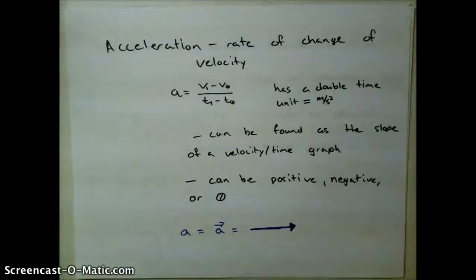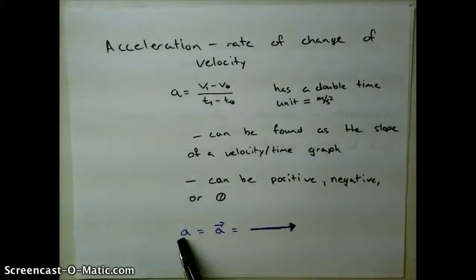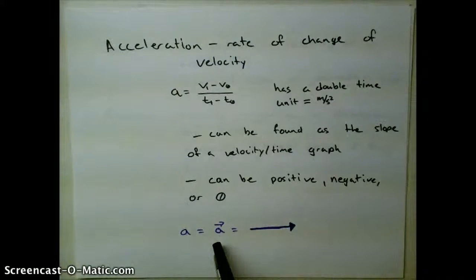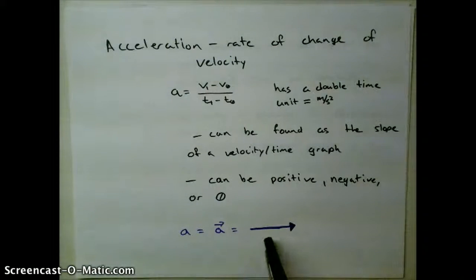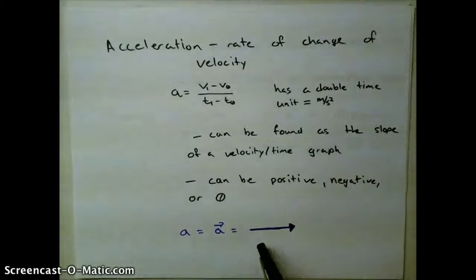We have a couple ways of symbolizing acceleration. It can be an A, it can be an A with an arrow over it. And whenever we do acceleration, we should always represent it by a purple arrow, or a dot, if there's no acceleration.